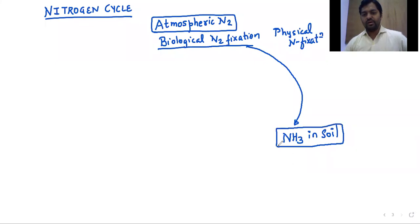Atmospheric nitrogen is converted into ammonia because of the nitrogen fixing bacteria like Rhizobium, which is in symbiotic association with root nodules of leguminous plants.